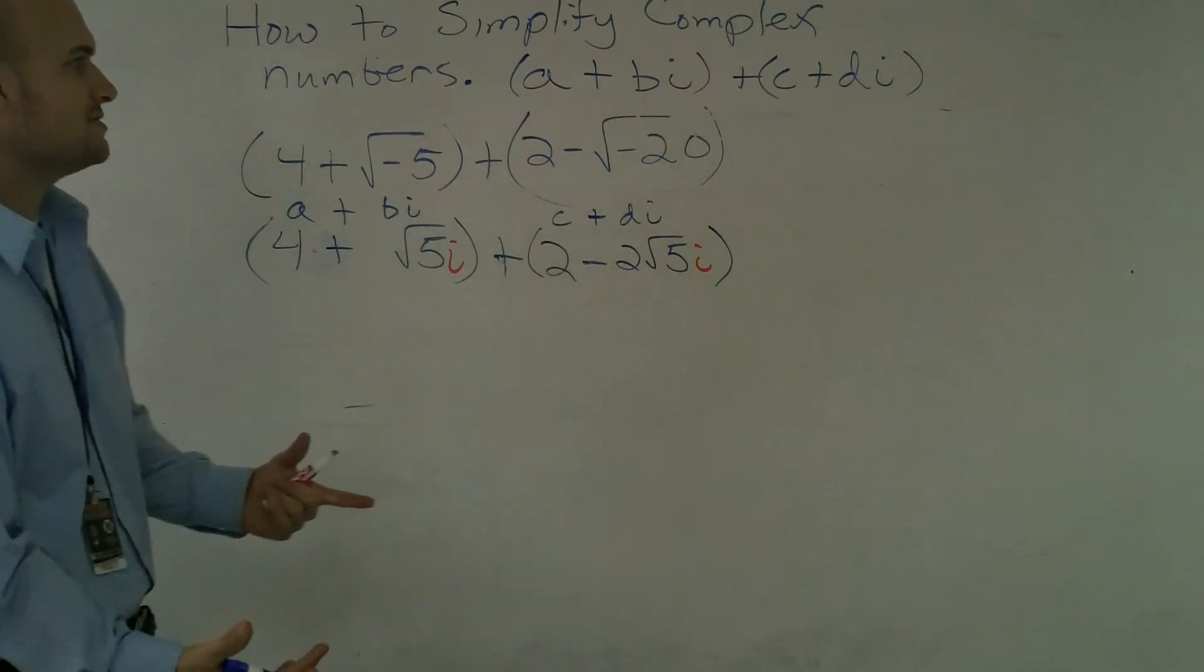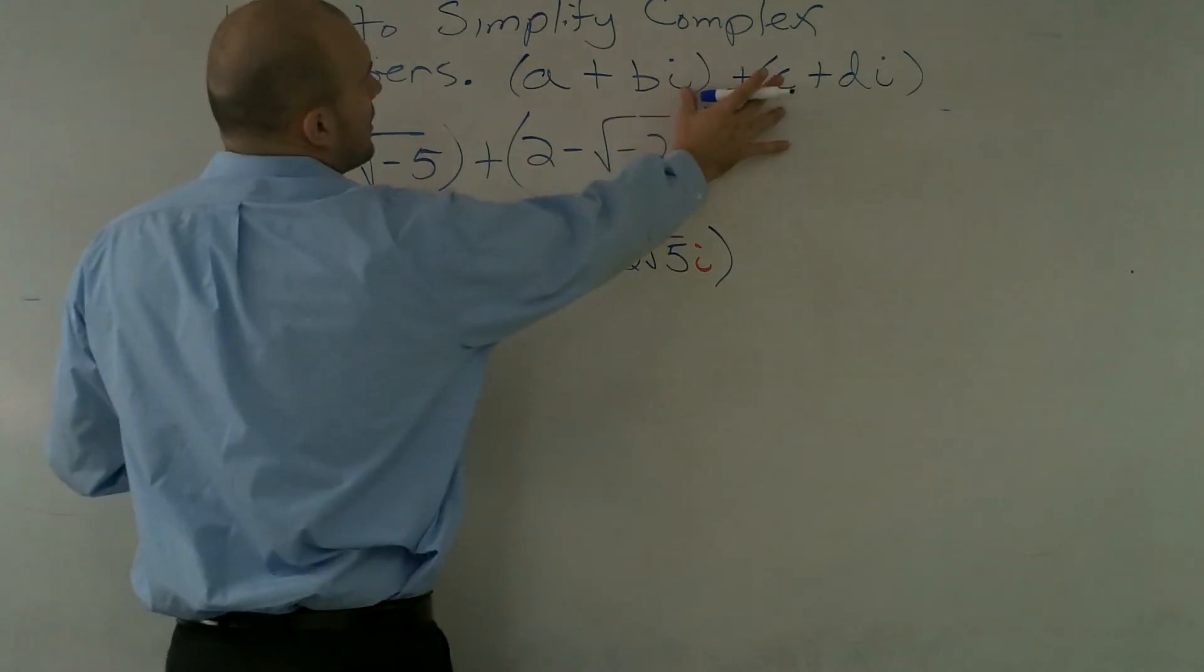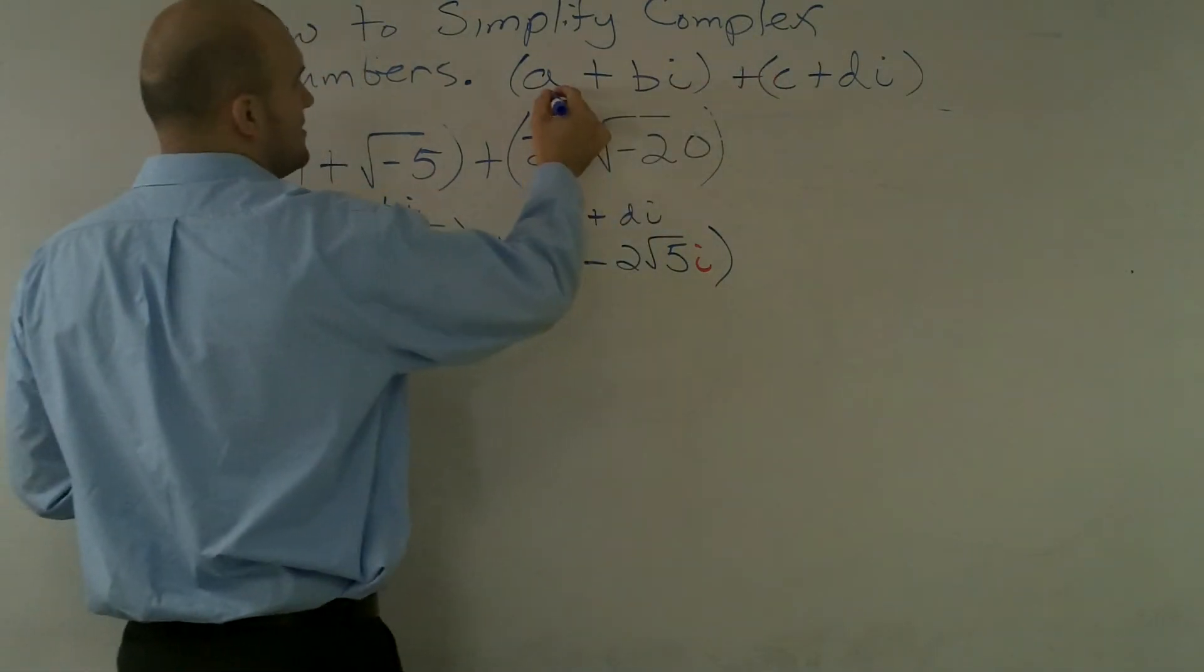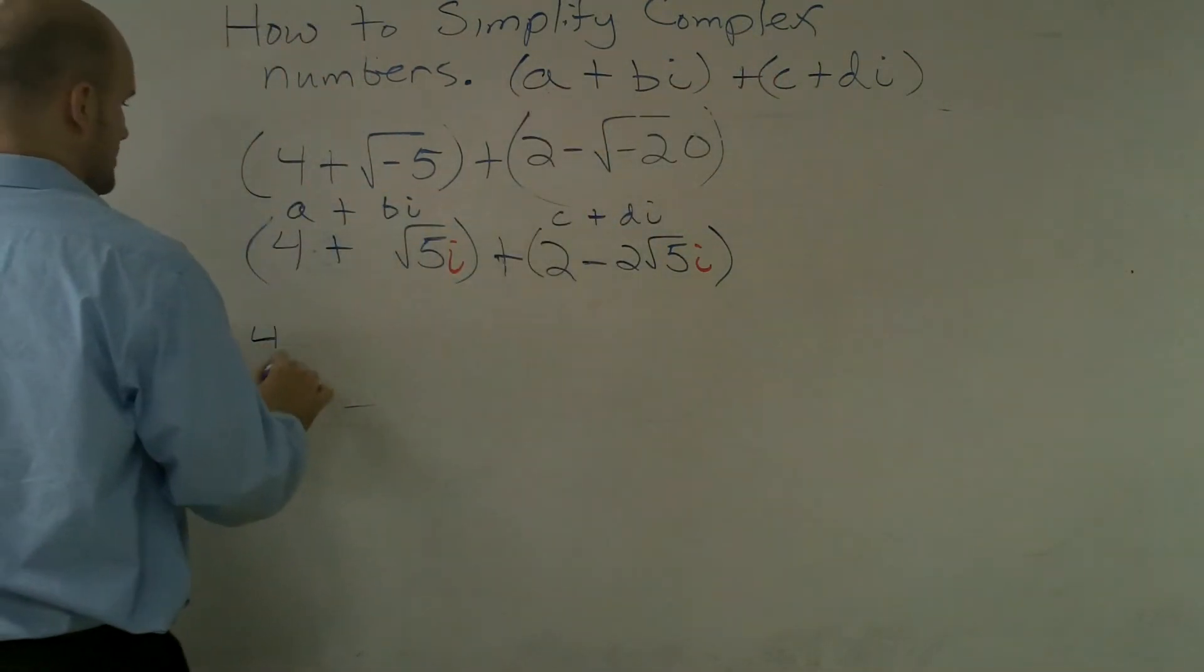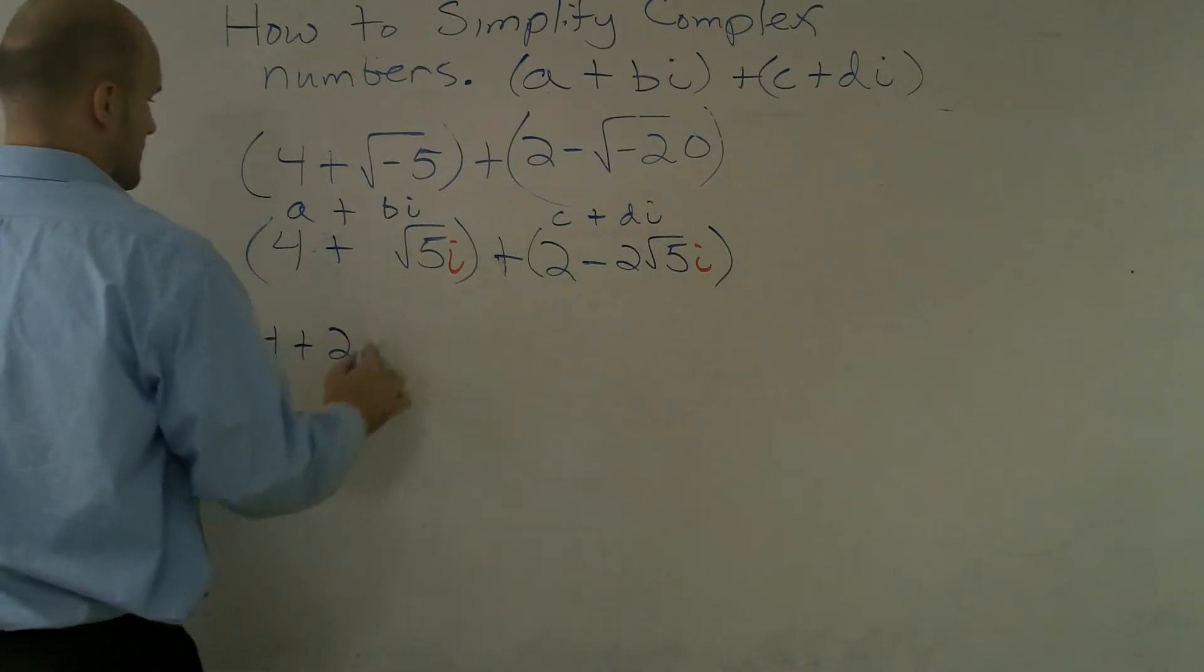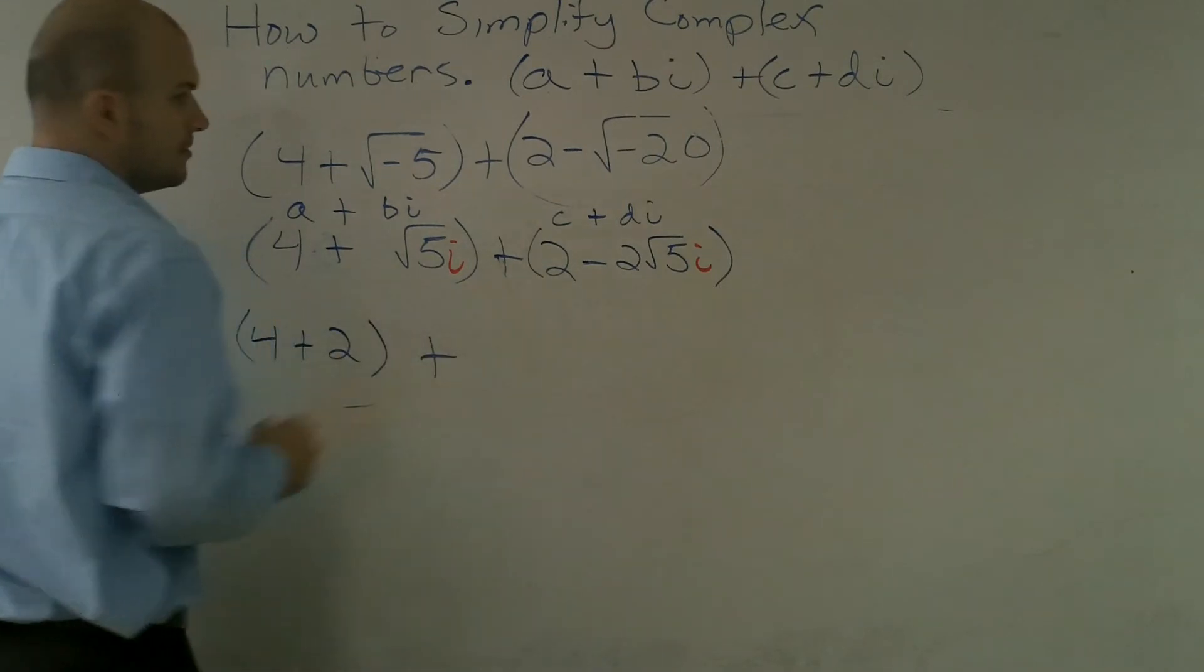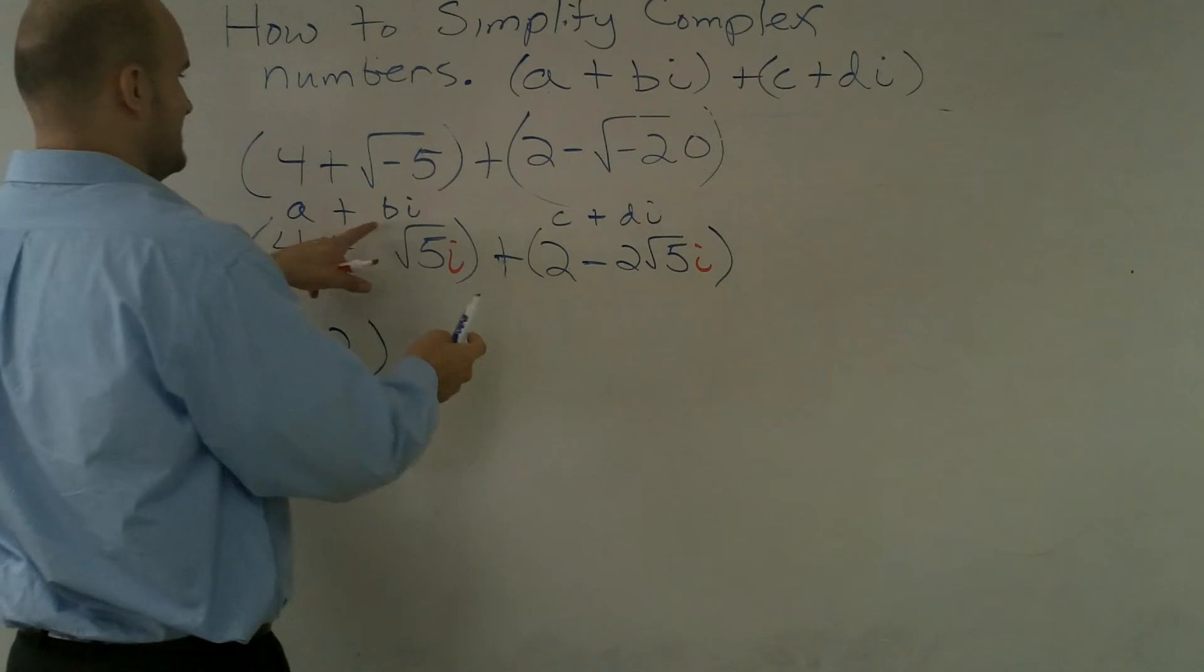Now, when I'm adding my two complex numbers, I'm going to add my a and my c, so it's going to become 4 + 2.